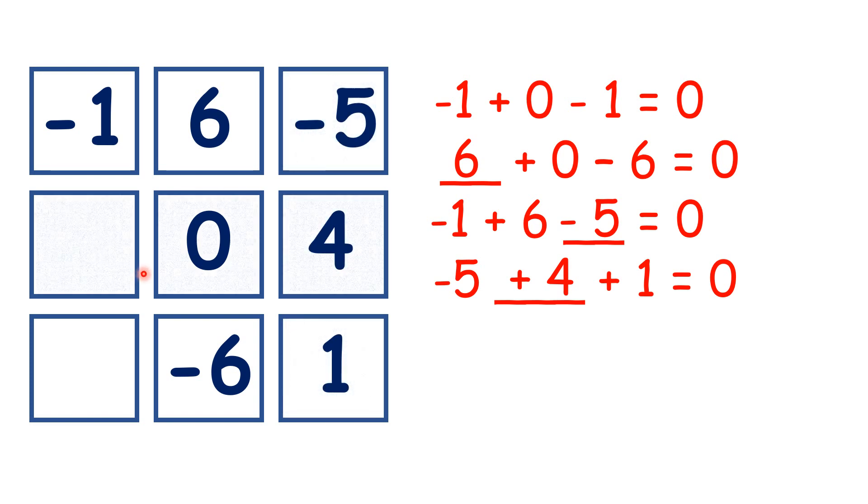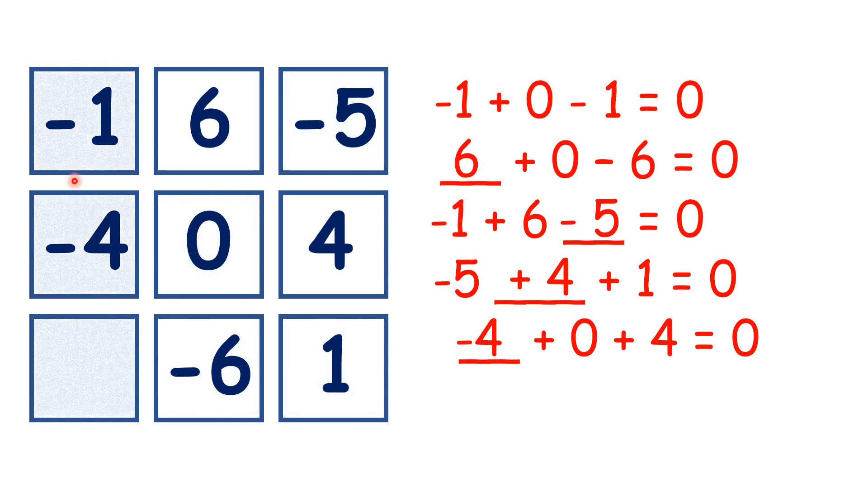Now something plus 0 minus 4 is 0, so we have minus 4. Now to get our last number, we could use this row or this diagonal, but let's use this column. We have minus 1 minus 4 plus or minus something is 0, so our missing number must be 5.